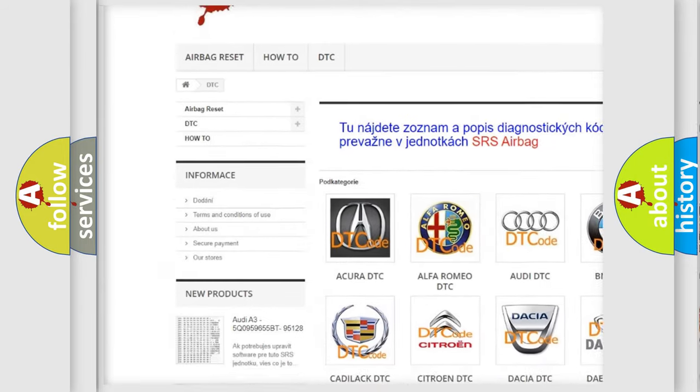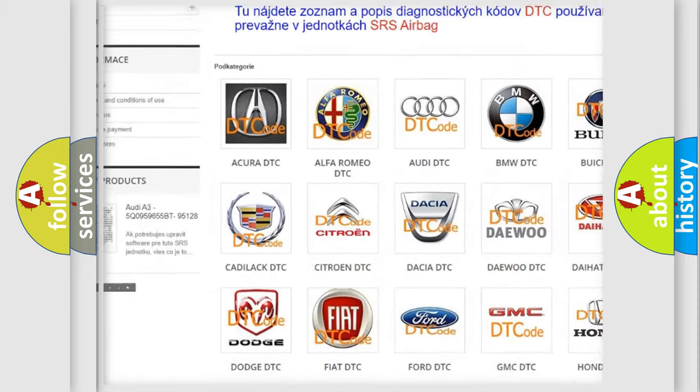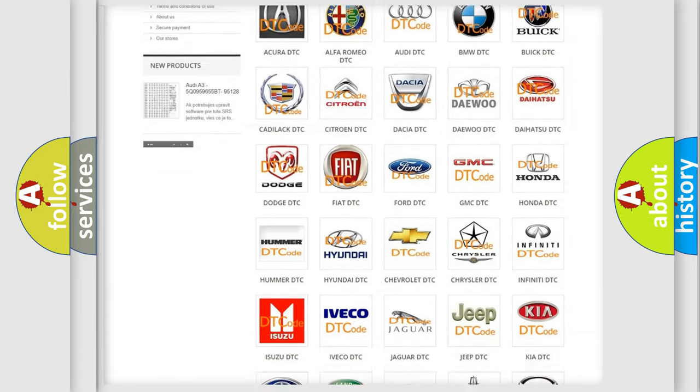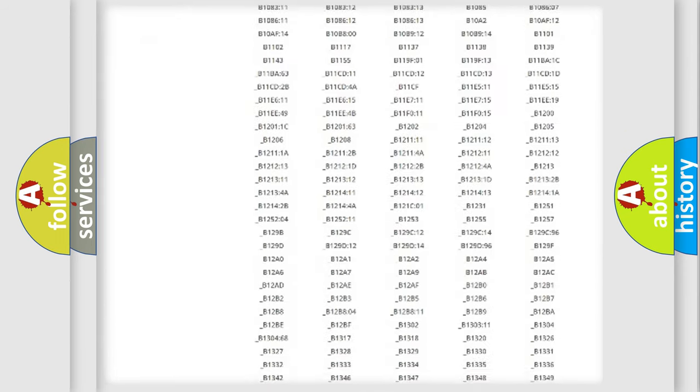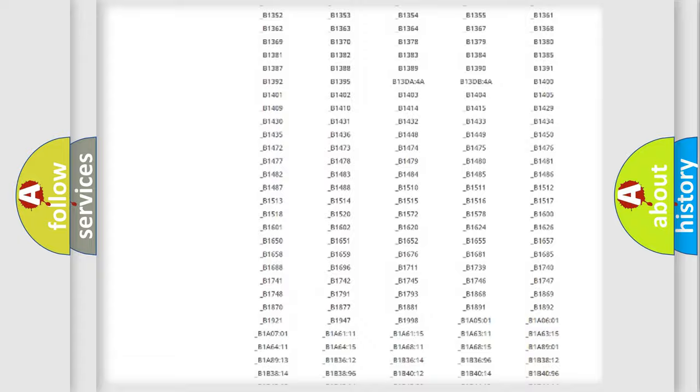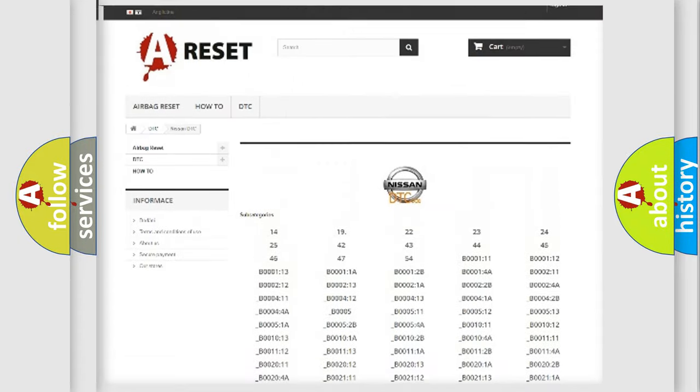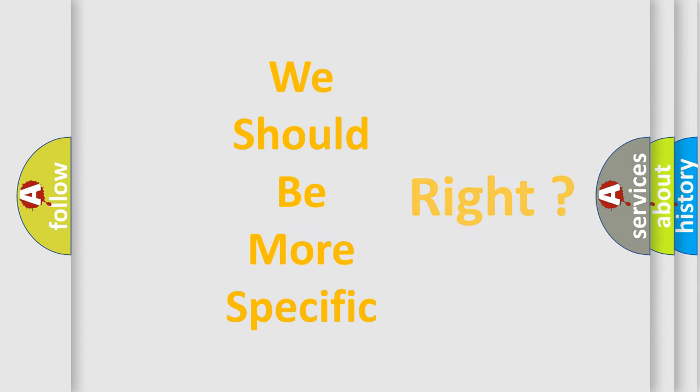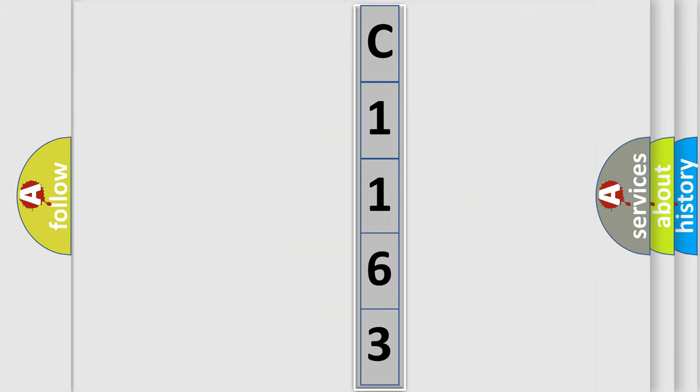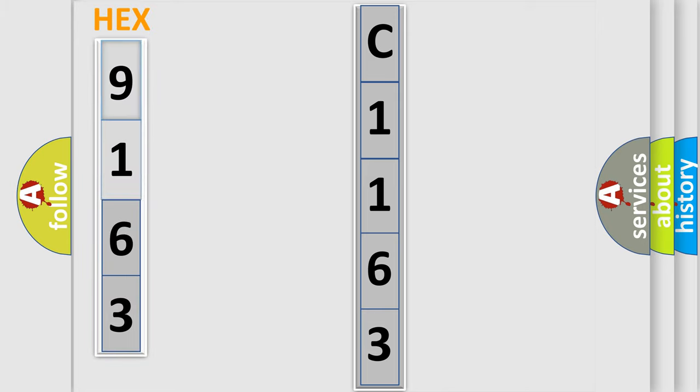Our website airbagreset.sk produces useful videos for you. You do not have to go through the OBD2 protocol anymore to know how to troubleshoot any car breakdown. You will find all the diagnostic codes that can be diagnosed in Nissan vehicles, and many other useful things. The following demonstration will help you look into the world of software for car control units.